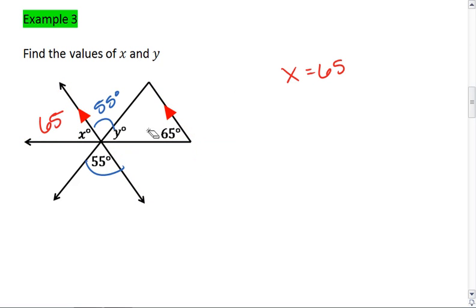Then, if x is 65 and the angle between x and y is 55, notice we have a straight line here, which means all three angles together is 180.